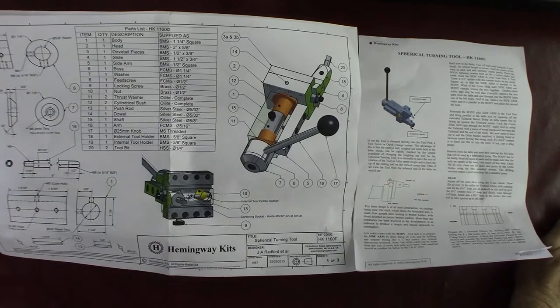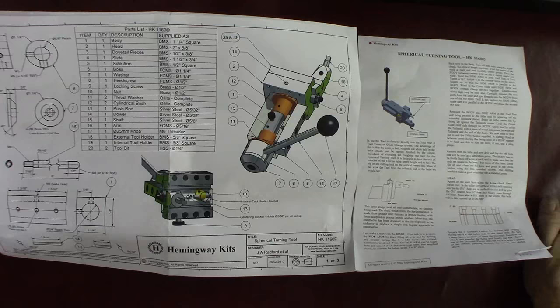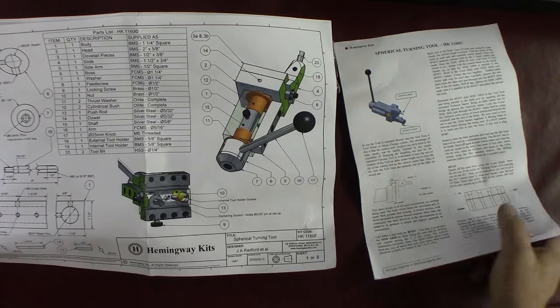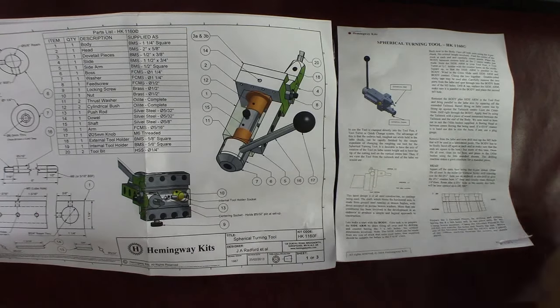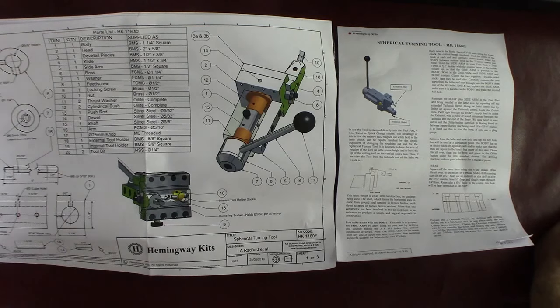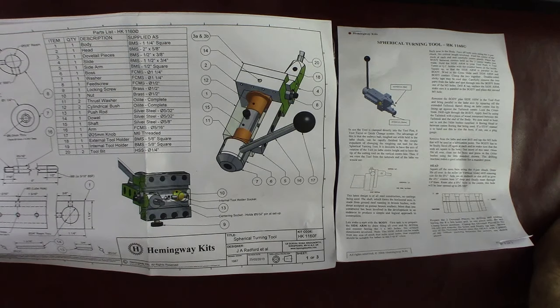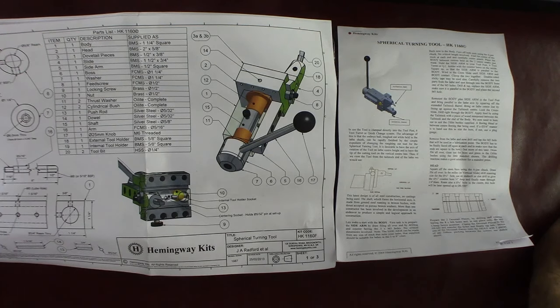How you doing everybody? Randy Richard in the shop. This is the second Hemingway kit that I picked up. This is actually the one I bought, the spherical turning tool. The rotary brooch one, they just sent it along as a gimme. Very nice of them. So that came out really well, the rotary brooch.